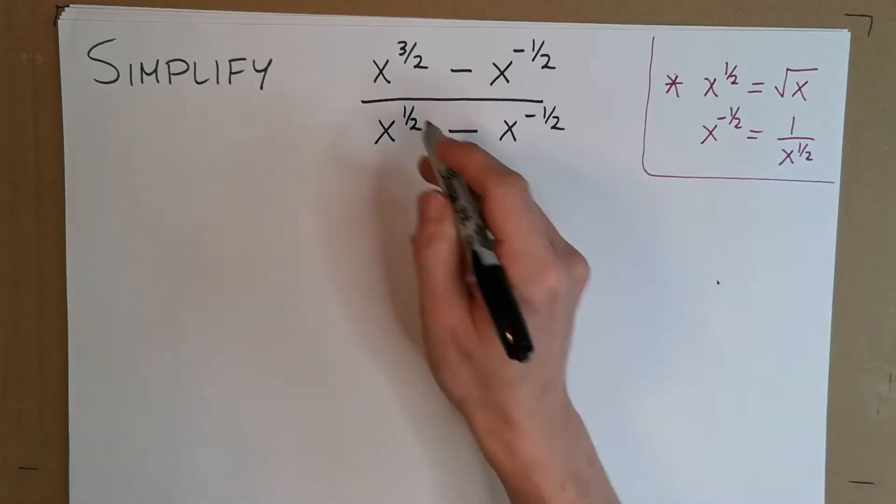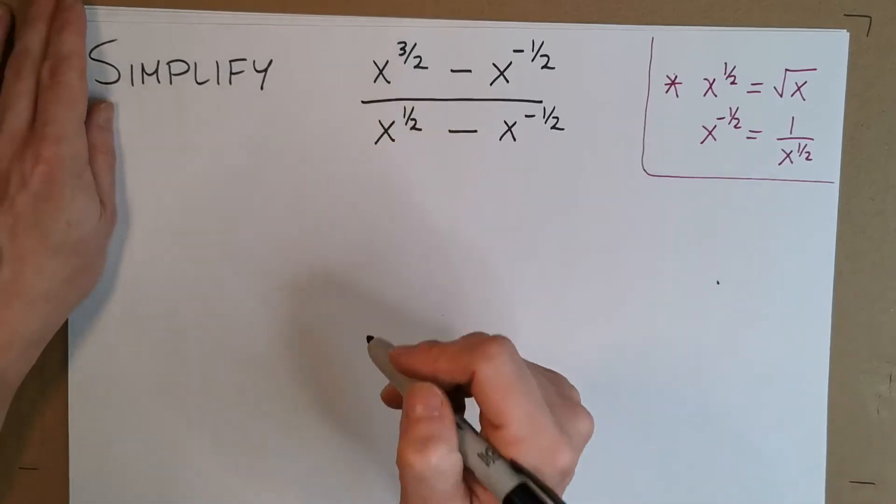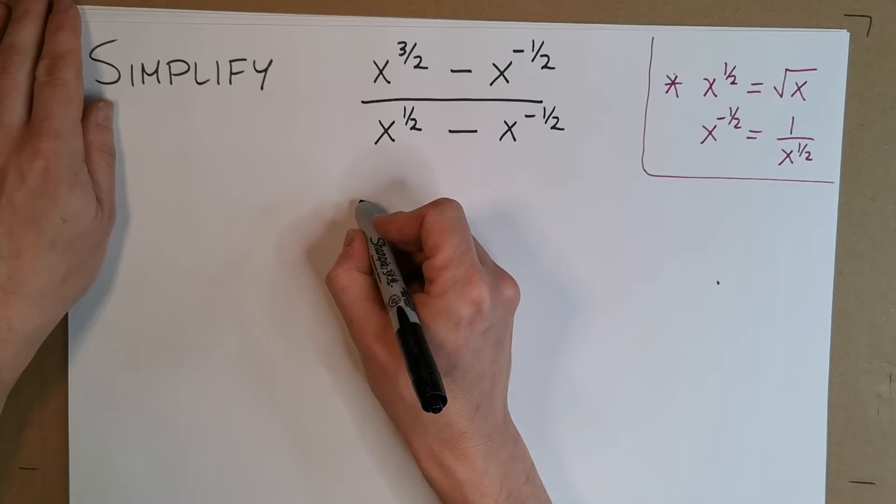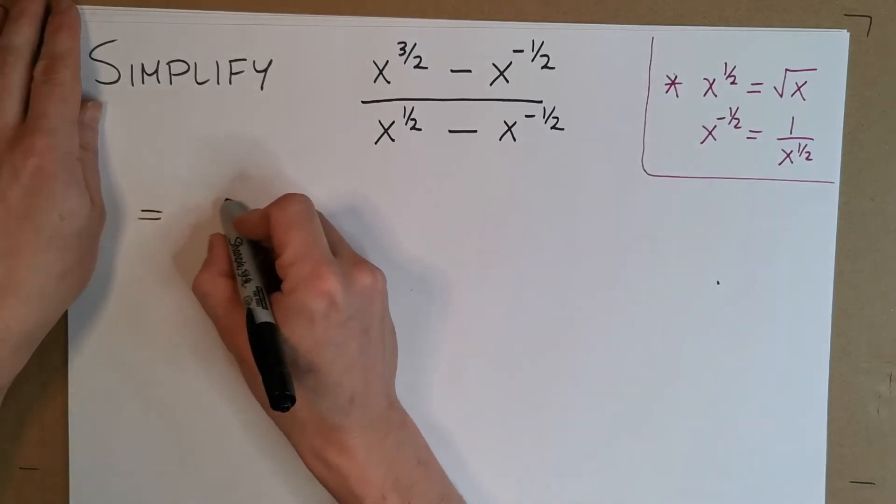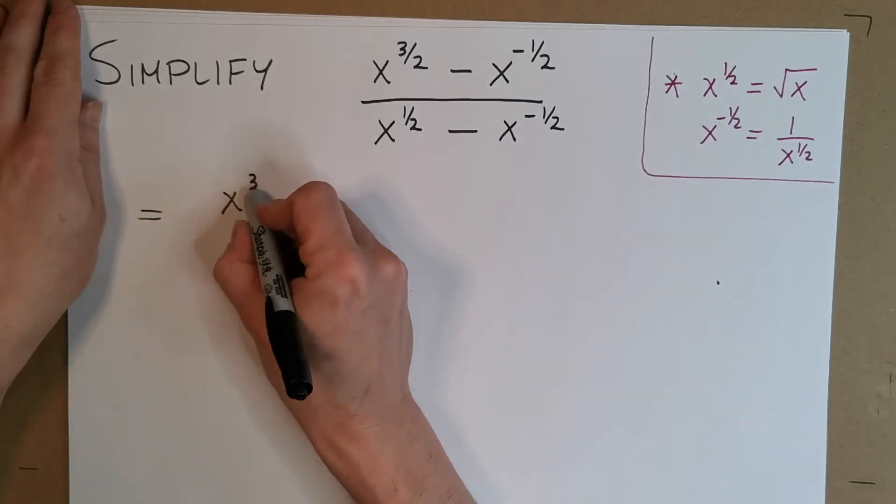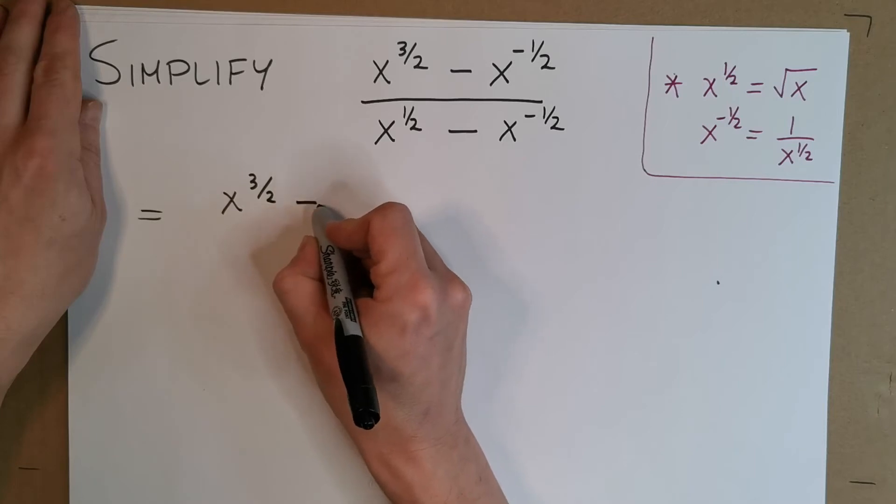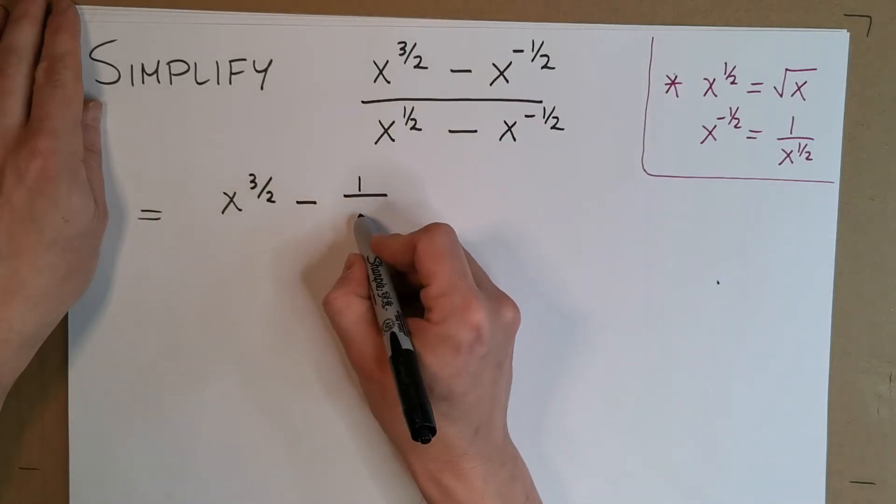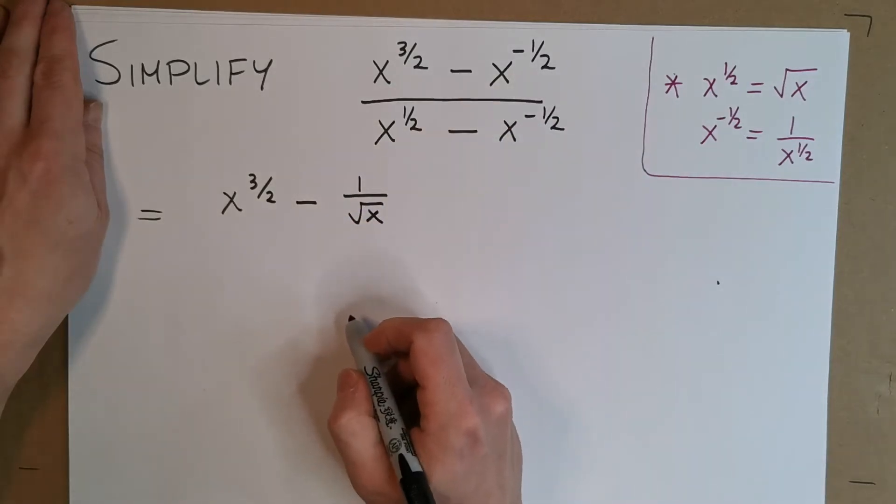So therefore, I can actually rewrite this and it might make it a bit easier for you to look at from what you're used to seeing. Let's say if we say this is equal to x to the 3 over 2 minus, now x to the minus the half. If I say that's 1 over the square root of x, because it's 1 over x to the power of positive a half.